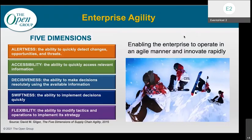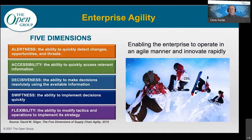This list of the characteristics of enterprise agility — meaning the ability to operate in an agile manner and innovate rapidly — your own list may differ, but this list is short and clear. It deals with alertness, accessibility, decisiveness, swiftness, and flexibility. You should note that these characteristics apply to all aspects of your enterprise, not just to software development pipelines or even the IT organization.